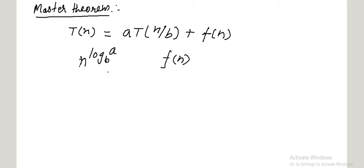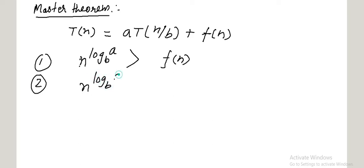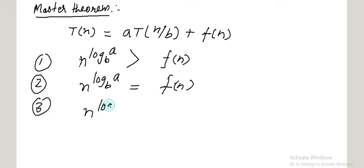There are three cases when we compare n^(log_B A) to f(n). The first case is when n^(log_B A) is greater than f(n). The second case is when they are equal to f(n). And the third case is when n^(log_B A) is less than f(n).